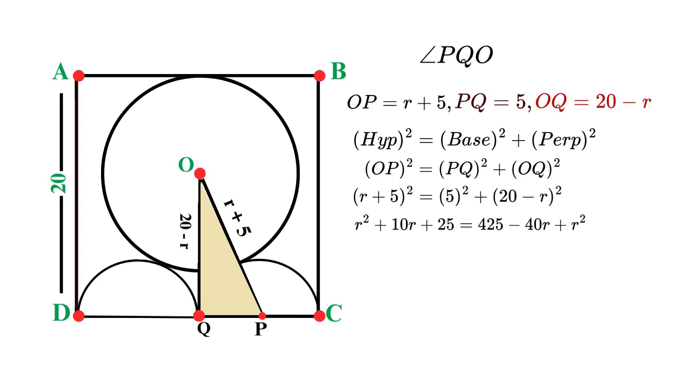Now let's simplify. First, we can cancel r² from both sides, because it appears on both sides of the equation. Next, subtract 25 from both sides, which effectively cancels the 25 on the left. After doing this, we're left with 10r = 400 - 40r. Now let's combine like terms by adding 40r to both sides. 10r + 40r equals 50r. So we have 50r = 400. Dividing both sides by 50 and we get r = 8.